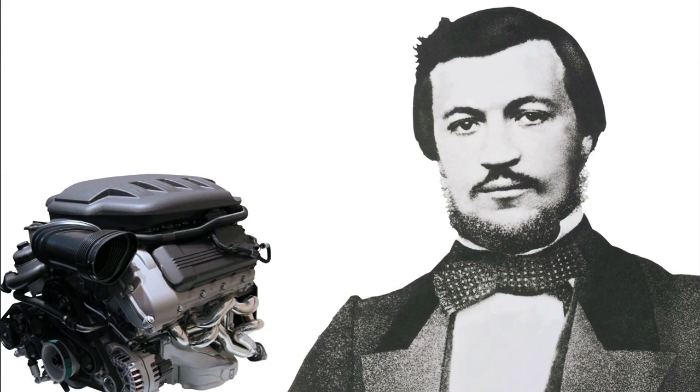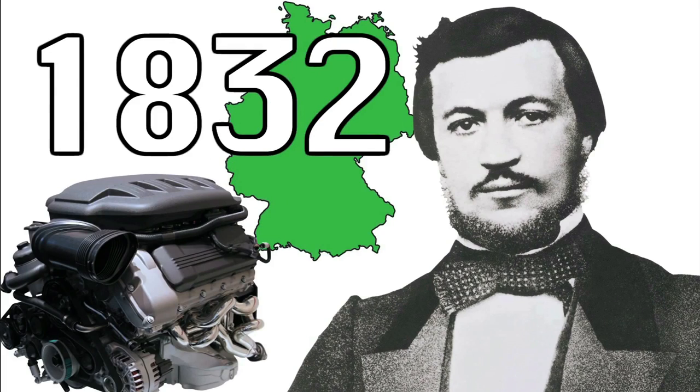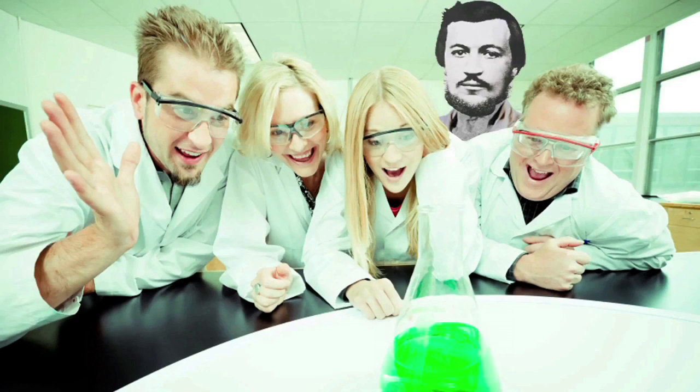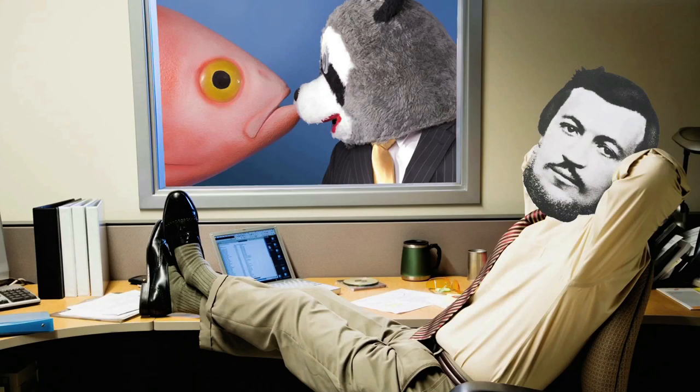Meet Nicholas Otto, born in Germany in 1832. Nicholas wasn't the star of his high school. In fact, he dropped out at the age of 16 and worked in a series of different industries.